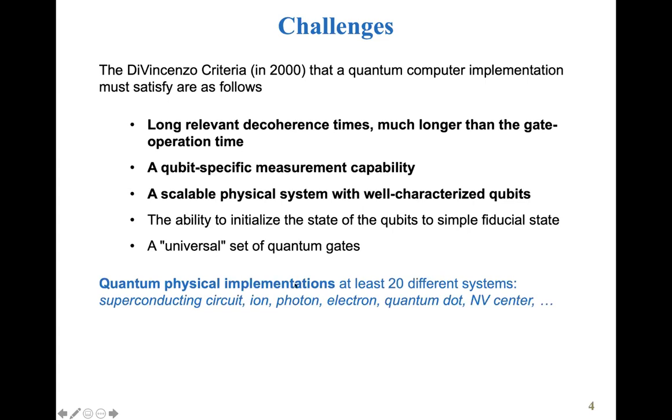Over the last 30 years or so, there's a lot of proposals for using different types of physical systems as a candidate for quantum qubits. There are at least 20 different types. I just named a few: superconducting circuits, trapped ions, photons, electrons, quantum dots, and nitrogen vacancy centers. There are a lot more of them. As you can see, the reason why there are so many physical systems proposed is because none of them are ideal. None of them are perfect. None of them satisfy all those criteria. So there has to be some kind of a compromise there.